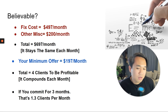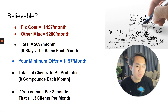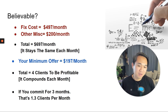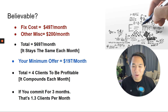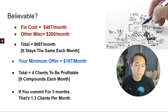If you commit for three months and you need four clients to be profitable, that's four divided by three — only 1.3 clients per month. In a month there are 30 days, and you have 30 whole days to get 1.3 clients. That is not a lot at all. I'm going to teach you how to do that in this course — how to prospect, how to generate leads, how to talk to people, and how to message people.